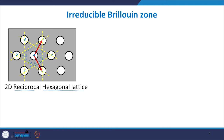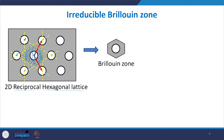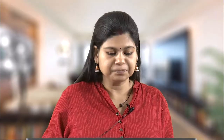This zone is the intersection — all points here are closest to this lattice point compared to any of the other adjacent lattice points — so by definition this becomes the Brillouin zone. For a hexagonal lattice the Brillouin zone itself is a hexagon. For a square lattice we saw it was again a square with the same lattice constant, but here this is a reduced hexagon.